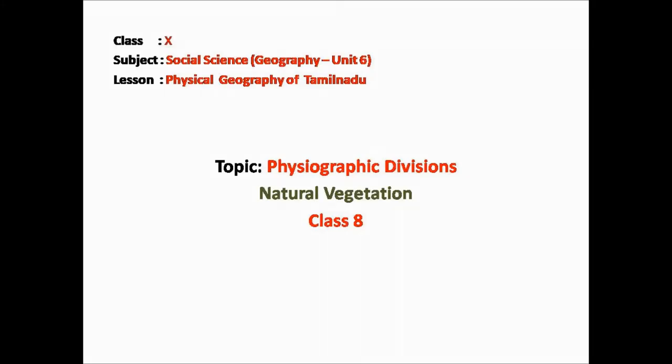In today's class we will see about natural vegetation. In the previous class we saw about the soil, its types, and what crops are cultivated in each type of soil. These cultivated crops and fruits form a part of vegetation, but they are not natural vegetation. The cultivation of crops takes place with the help of human support, but natural vegetation occurs naturally.